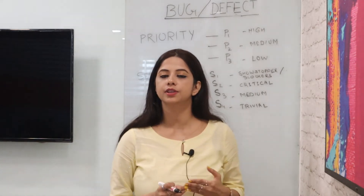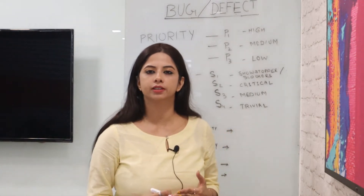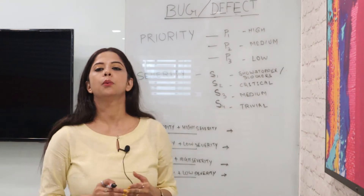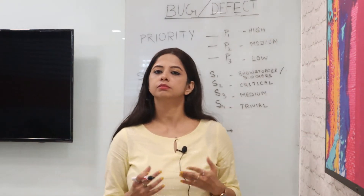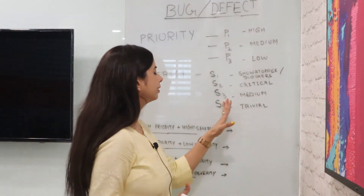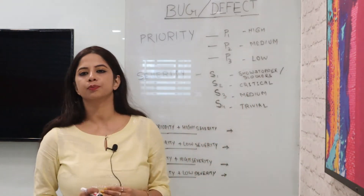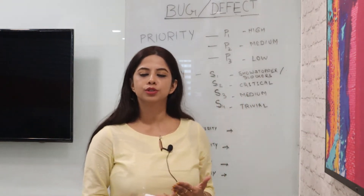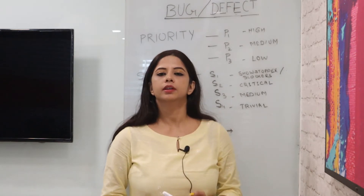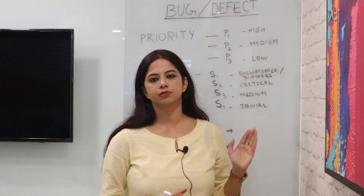S2 represents high severity or critical issues. S3 represents medium severity issues. S4 is very low severity — trivial issues can be marked as S4.